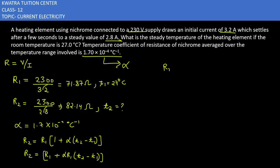This becomes T2 minus T1 equals R2 minus R1 divided by alpha R1. So T2 equals R2 minus R1 divided by alpha R1 plus T1. Here R2 is 82.14 minus R1 is 71.87, next alpha into R1, with alpha being 1.7 into 10 minus 4 times R1 which is 71.87, plus T1 which is 27.